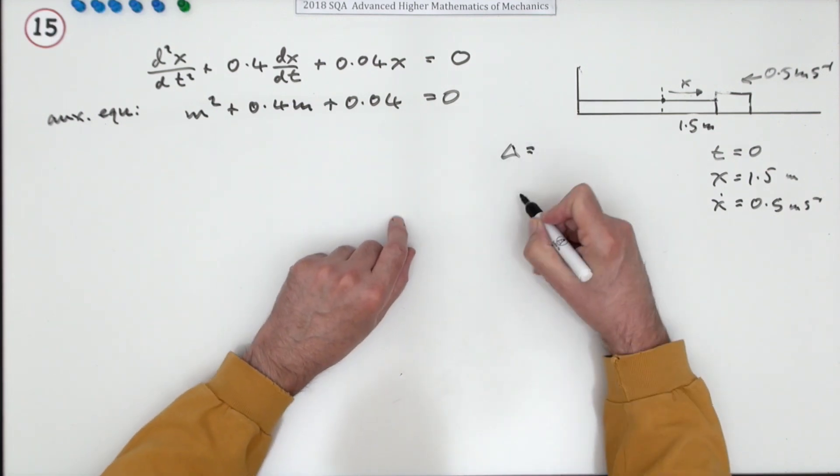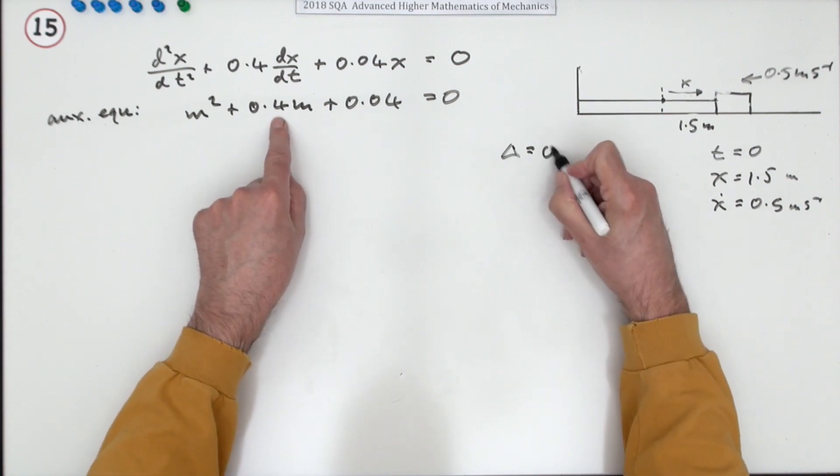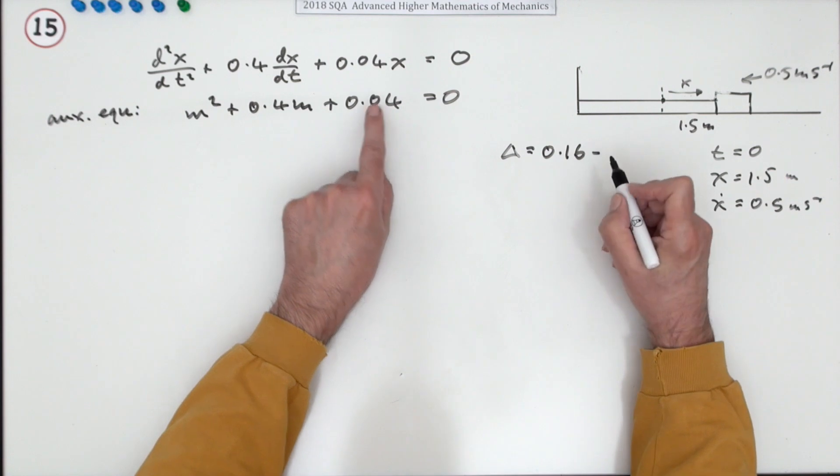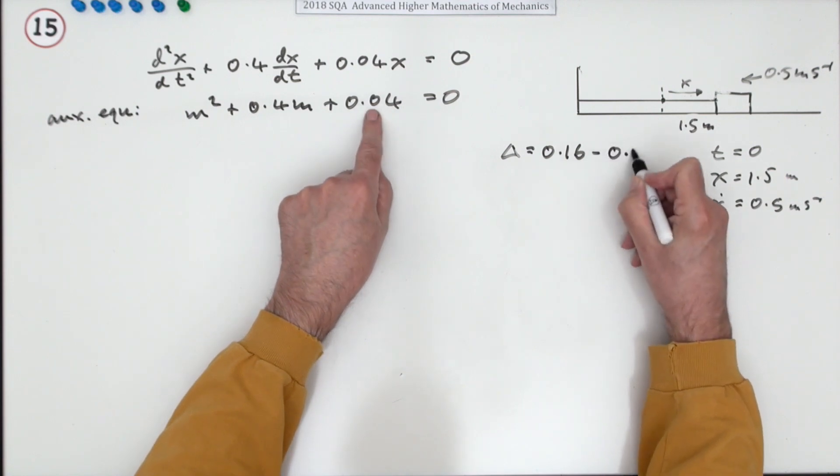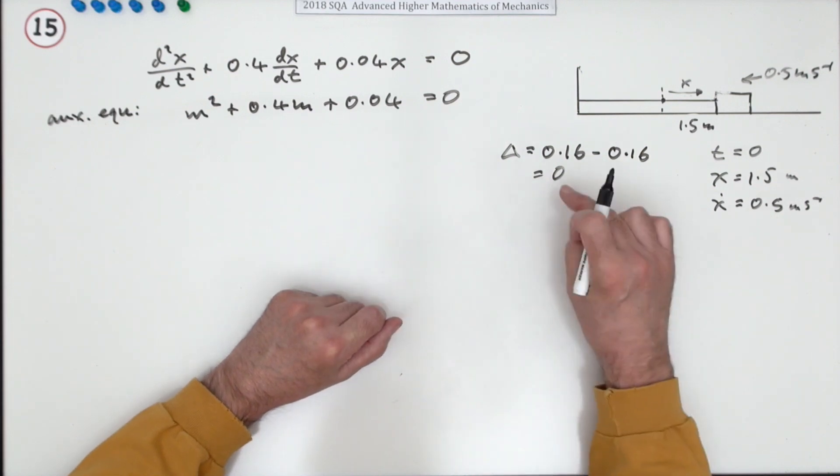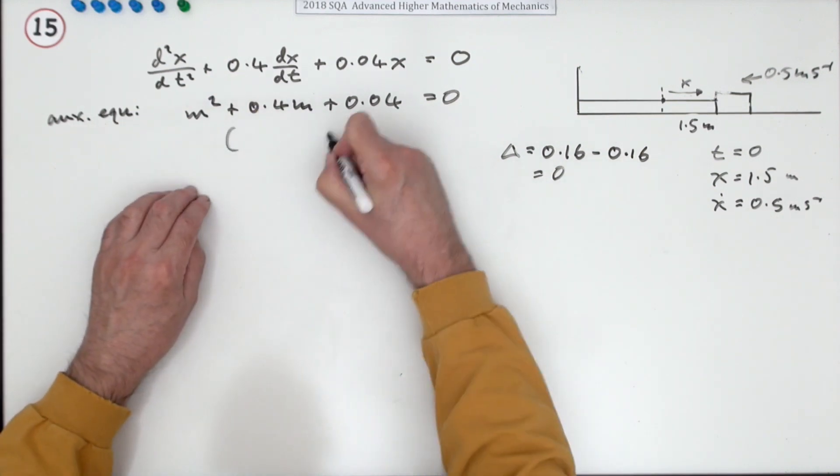What's the discriminant? So that would be b squared, which is 0.16, because I'll have two decimal places, minus 4ac, so that's also 0.16. The discriminant is zero. Now the discriminant being zero means you know it's a perfect square.